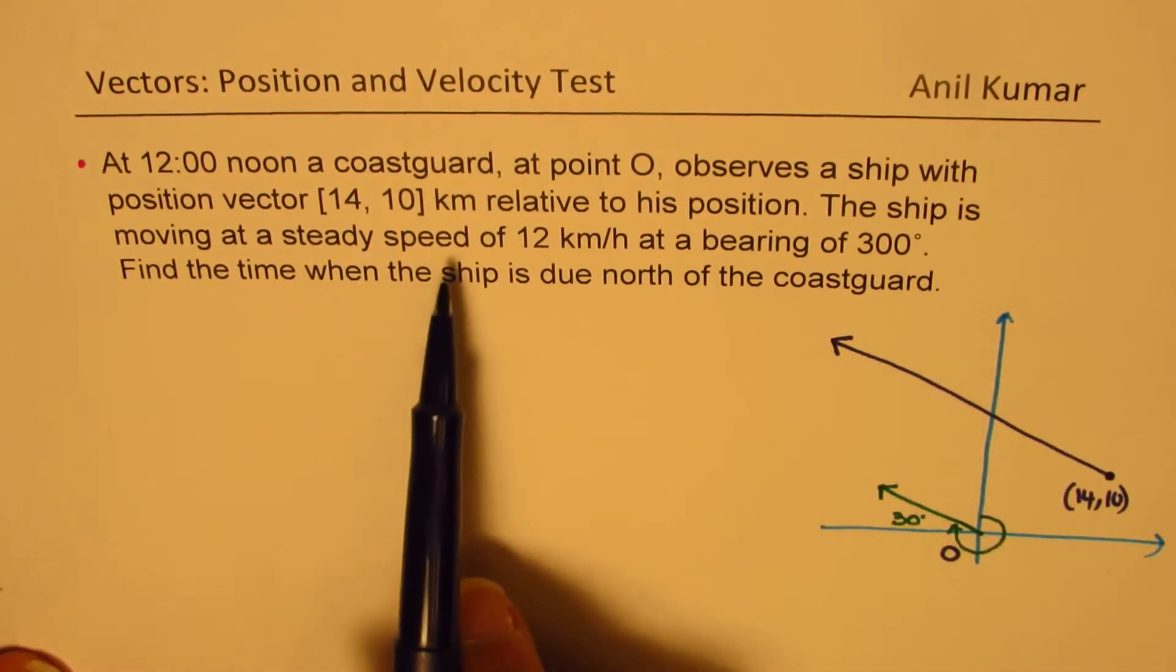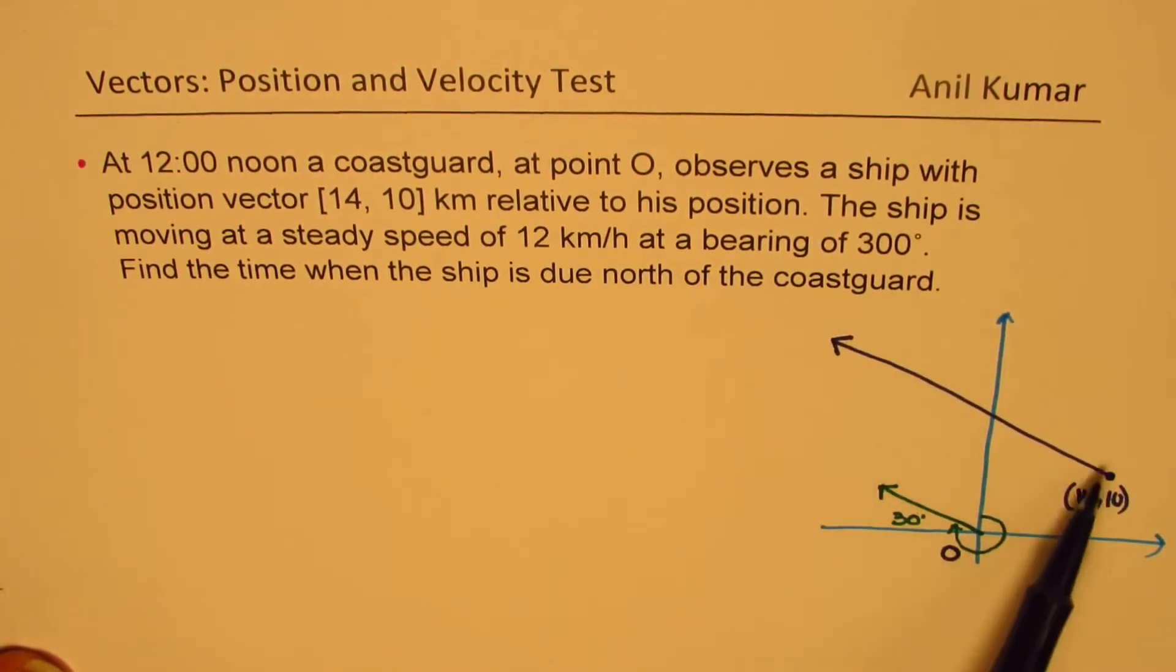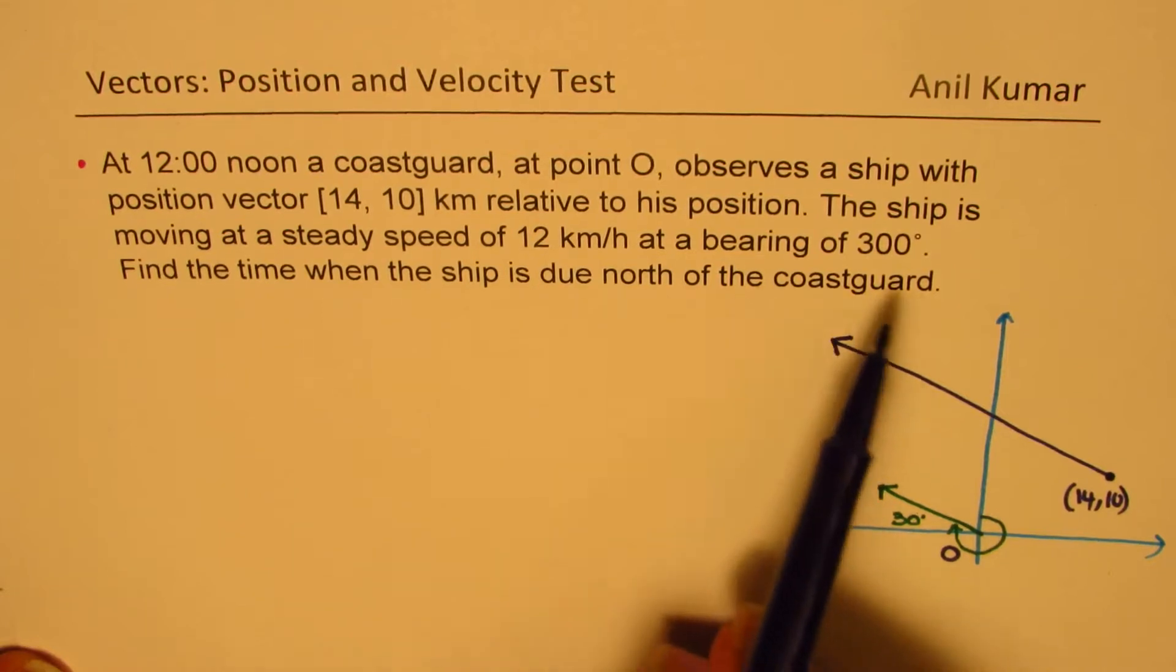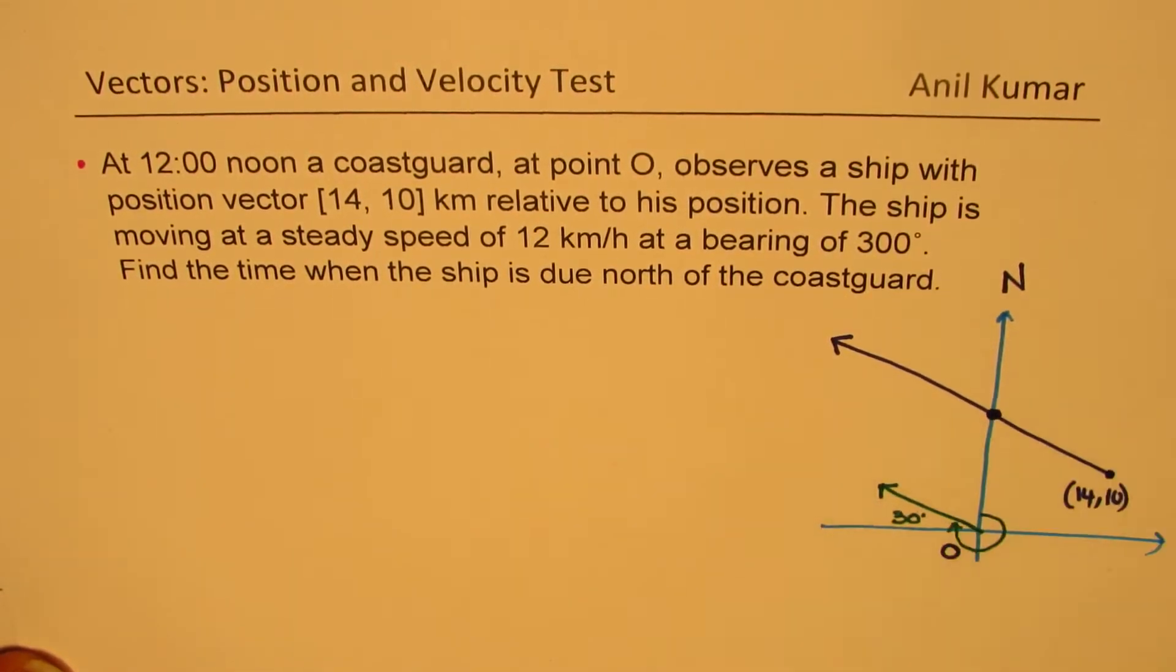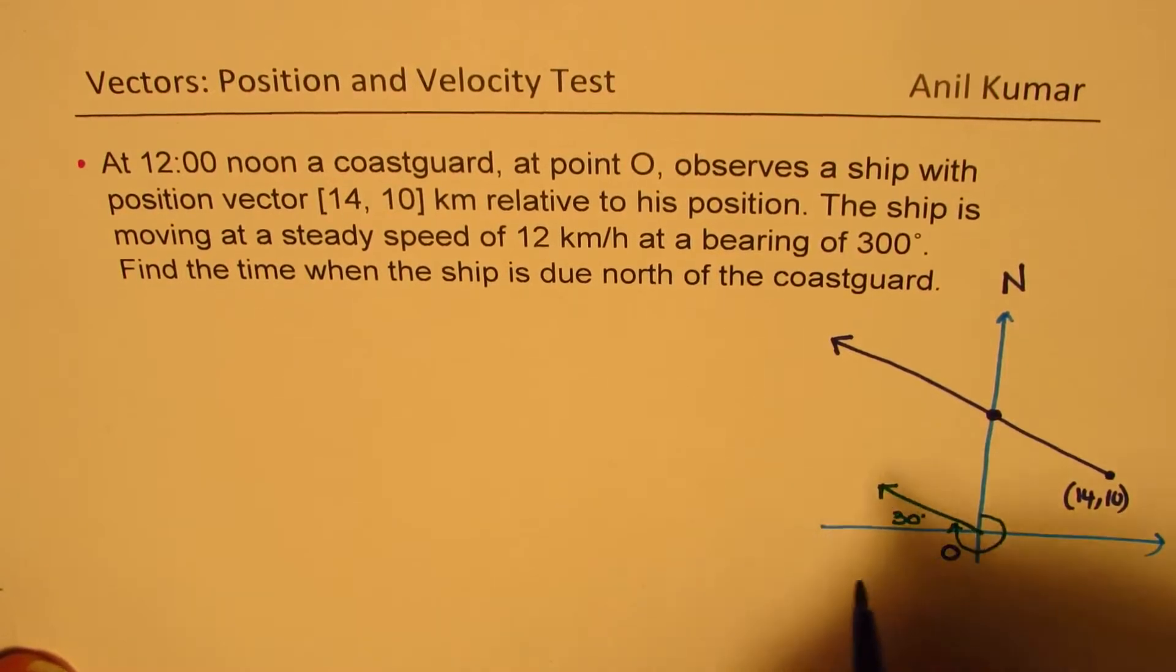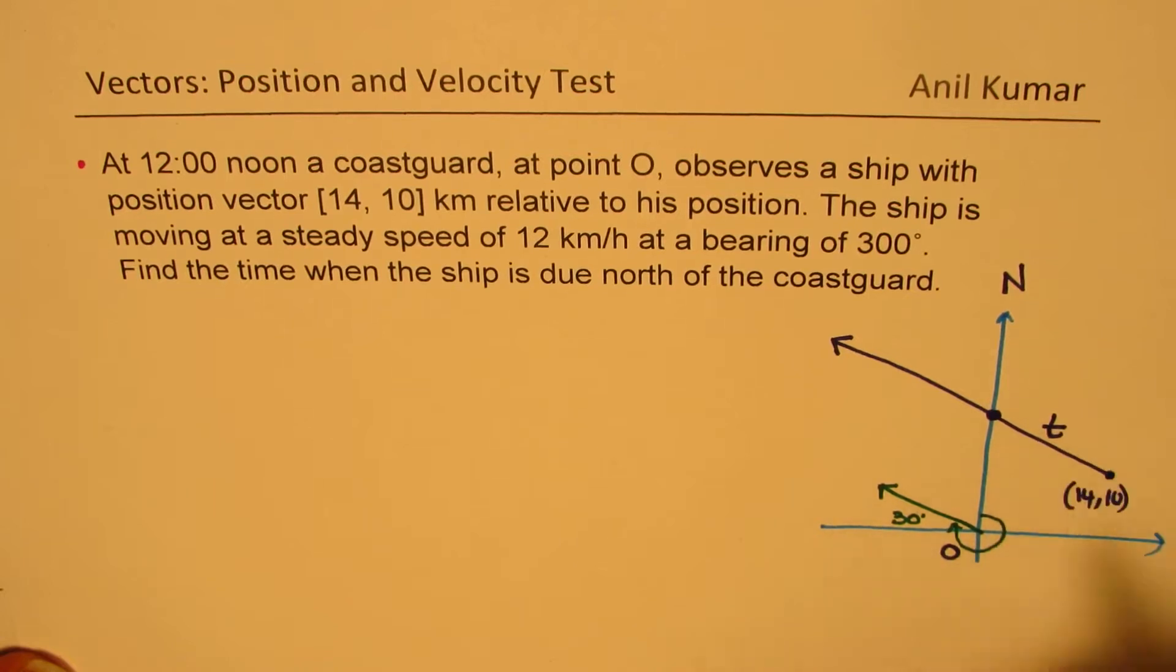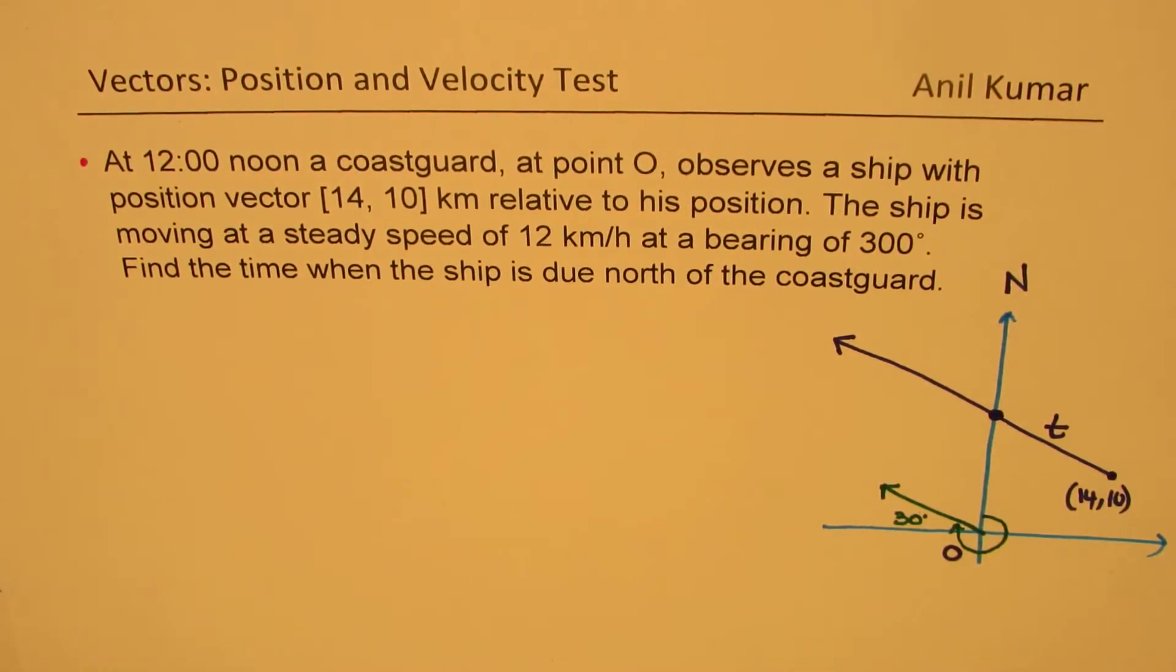The ship is moving at a steady speed of 12 kilometers per hour at the bearing of 300. We have sketched all this. Find the time when the ship is due north of Coast Guard. So due north means we want to find this point. We need to find this time. The equation should be clear now.